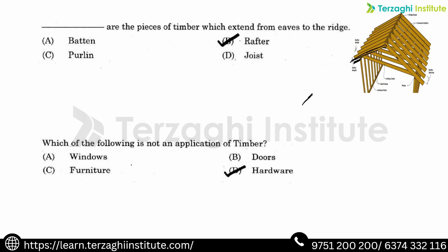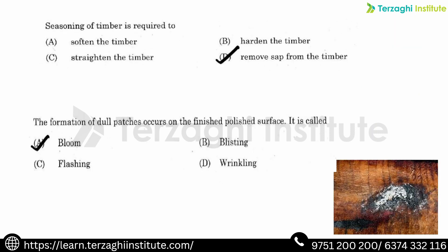Timber is used for windows, furniture, and doors but not for hardware — that is not an application of timber, so the answer is option D. Seasoning of timber is required to remove moisture content. The seasoning process achieves full strength by removing all moisture content. Removing sap — which contains moisture — from timber is what seasoning involves.